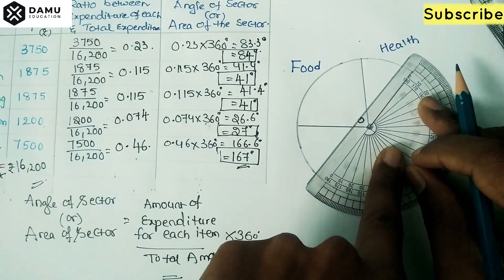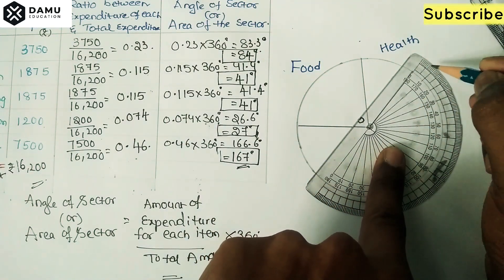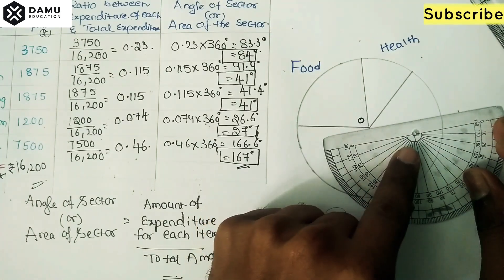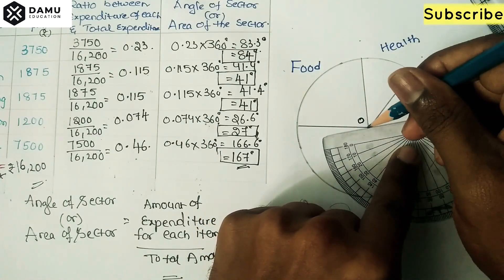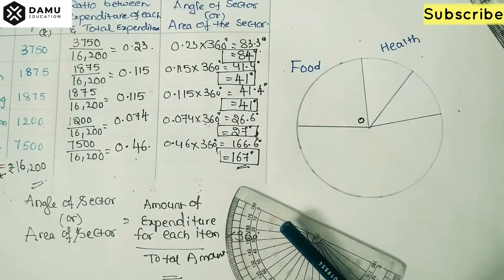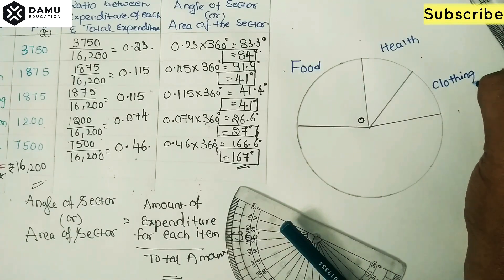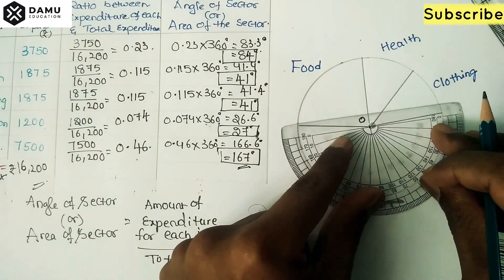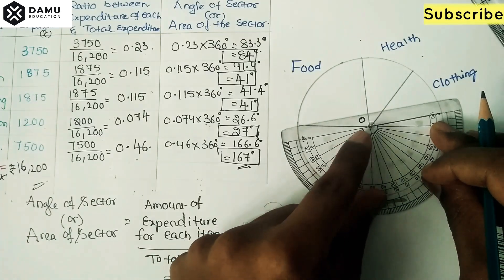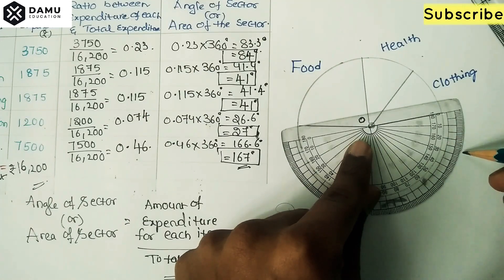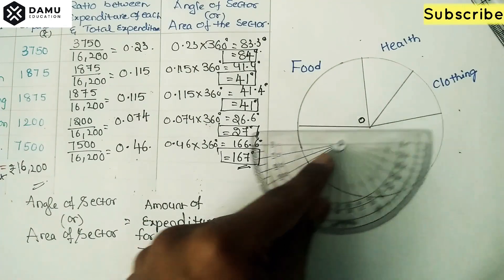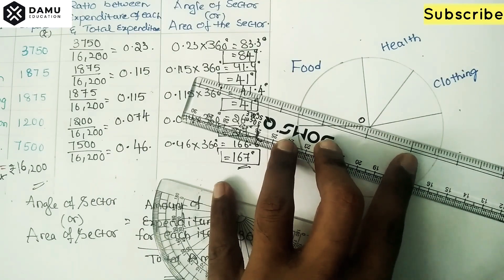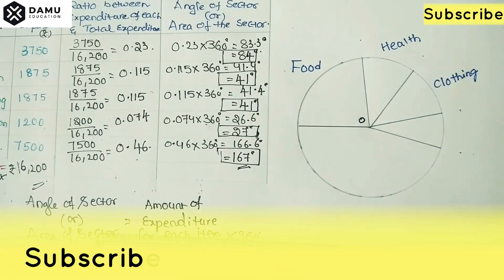Next, for clothing, place the protractor at the midpoint, align with zero degrees, and measure 41 degrees — counting 0, 10, 20, 30, 40, 41. Draw that line. This sector is for clothing. Then for education, measure 27 degrees and draw that line. This sector is for education.